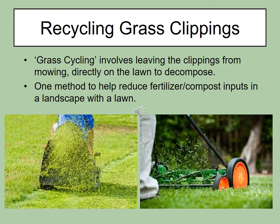Sometimes machines have attachments where the blade rotates and instead of shooting clippings into a bag, you can plug it so the clippings get rotated around, stay in the blade area longer, get chopped up smaller, and are better grass clippings to decompose quickly on the lawn. With a push mower, the blade pieces are rather large — you can still leave those there, but they look a little worse and decompose more slowly. But that's what grass cycling is.